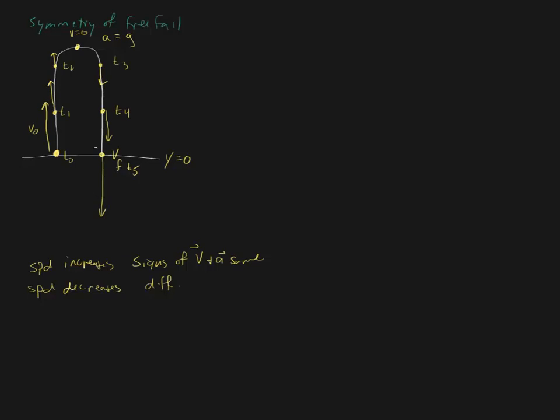Some other things to take note of. When you look at any particular elevation, the magnitude of v or the speed is the same for the object. Here, here, here, down here at the bottom at ground level.